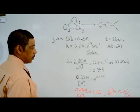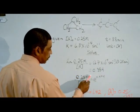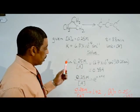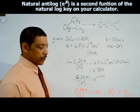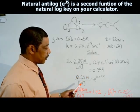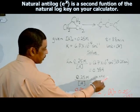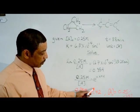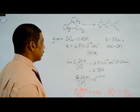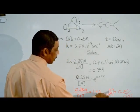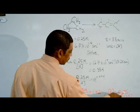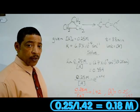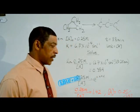First, solving the right side of the equation: K times T is equal to 0.354. Now we take the natural antilog of both sides of the equation, which eliminates the natural log on the left, generating: 0.25 molar divided by the final concentration of cyclopropane is equal to the natural antilog of 0.354, which equals 1.42. Solving for the final concentration, it is equal to 0.25 divided by 1.42, so the final concentration of cyclopropane is 0.18 molar.